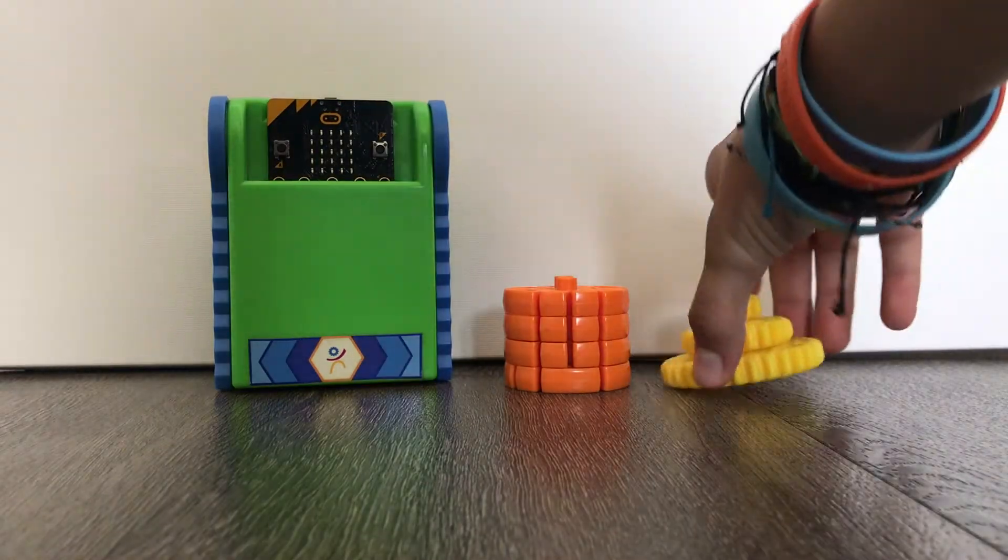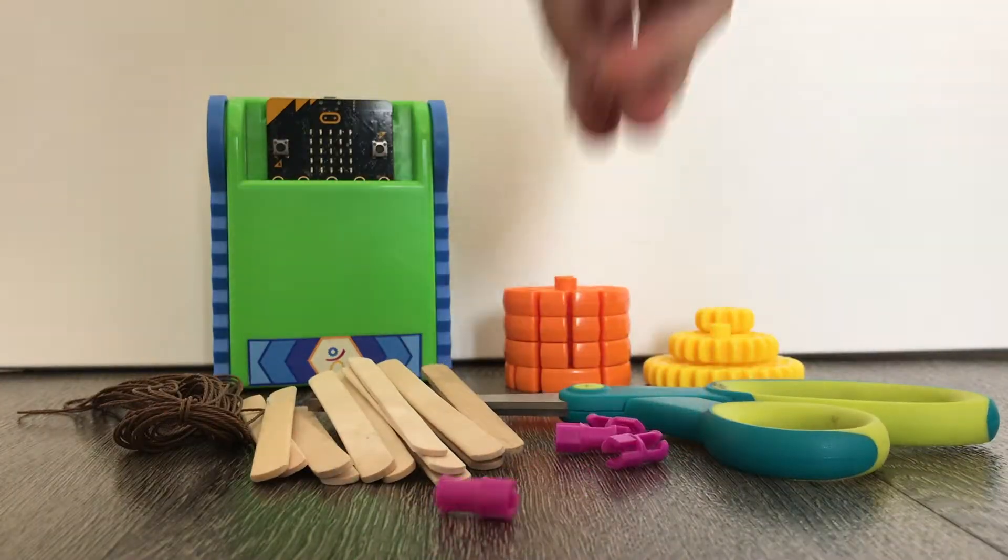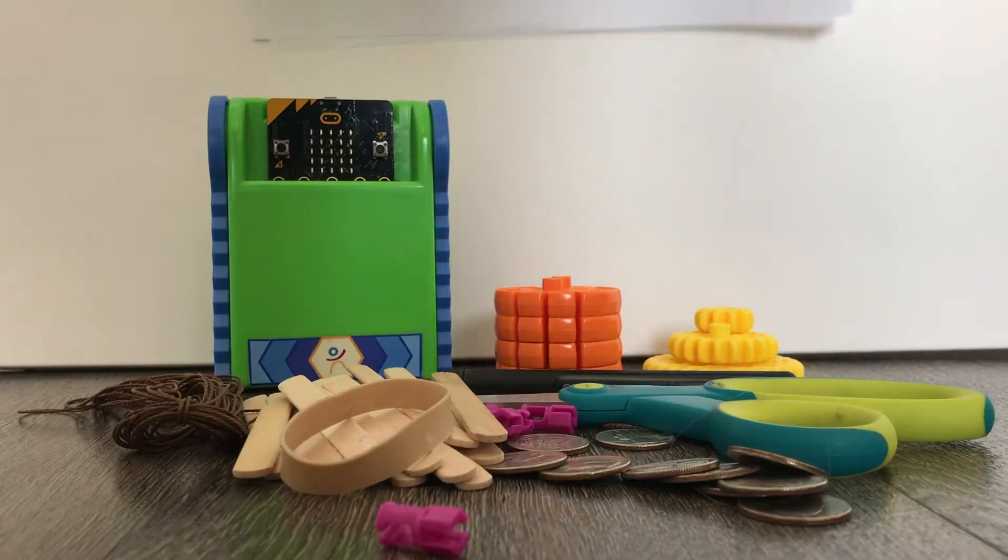Step 1. Gather your Trashbot gears, pucks, axles, tape, string, paper, scissors, rubber bands, and your coins or weights.